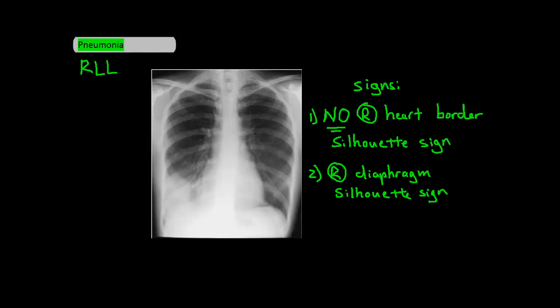Now let's talk about a right lower lobe pneumonia, which can be anywhere in this area. The two signs that help you identify this are the lack of a right heart border silhouette sign and the silhouette sign of the right diaphragm. The right lower lobe doesn't border the right heart border, so a right lower lobe pneumonia shouldn't cause a right heart silhouette sign, as is the case here. However, the right lower lobe does border the right diaphragm, which is why you can have a silhouette sign of the right diaphragm.